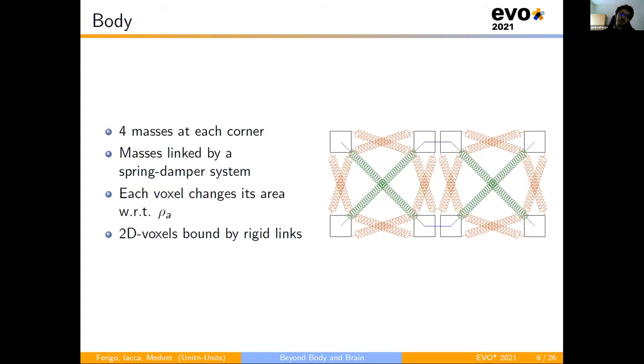As regards to the body, we use the 2D voxel implementation. The voxels are composed by four masses arranged at each corner and linked by spring damper system that allows them to change the area. This change is regulated by a parameter, rho-A, which is a measure of the strength of the voxels. It indicates how much the voxels can shrink or expand with regards to the rest area. Finally, the voxels are bound together by rigid links composing the body shape.